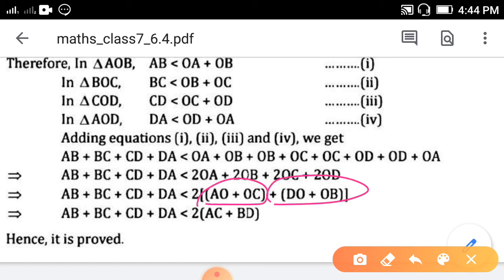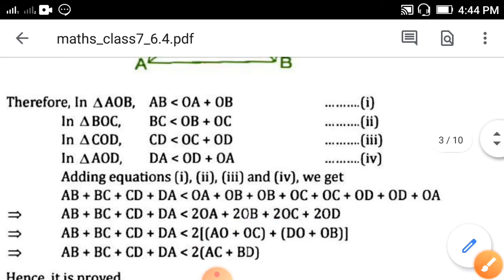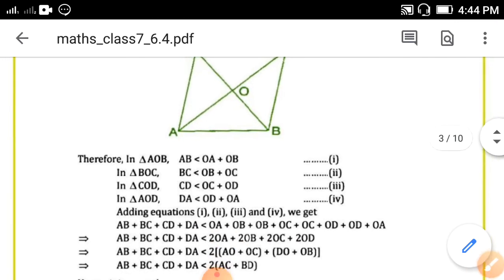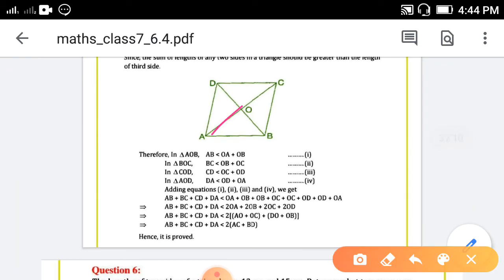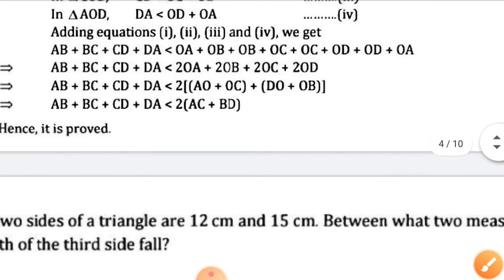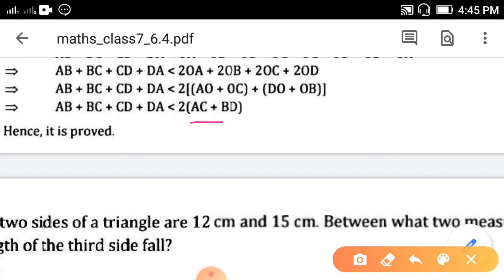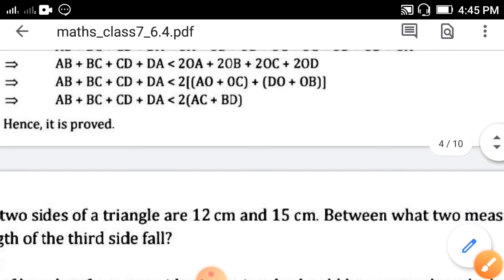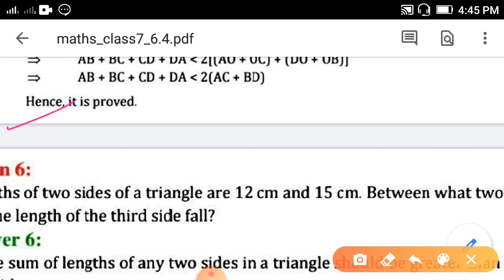Now you can see in the figure, AO plus OC - here AO plus OC, so these two sides if you are going to add, then it will be full AC, this diagonal AC. So you can write here AC. And DO plus OB, instead of that you can write DB. So here it is written AC plus BD. So this is the equation that you want. Hence it is proved.